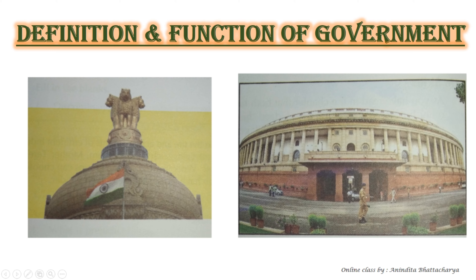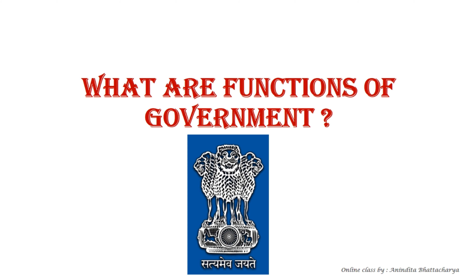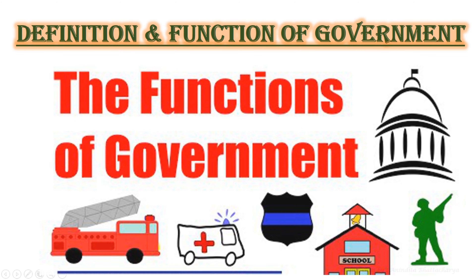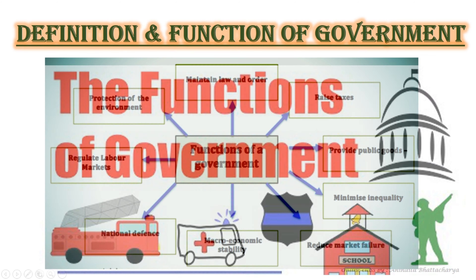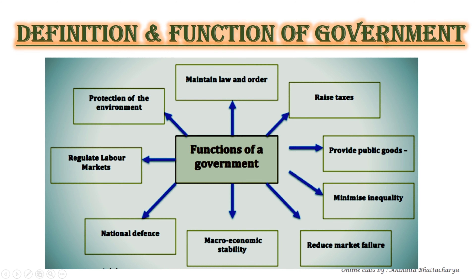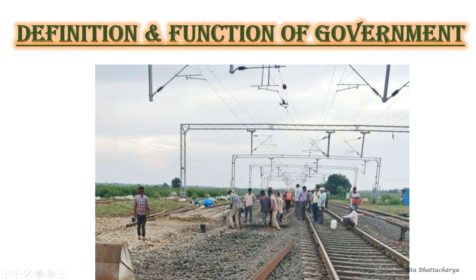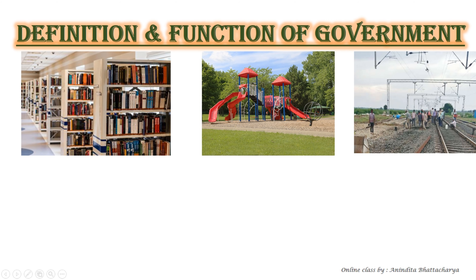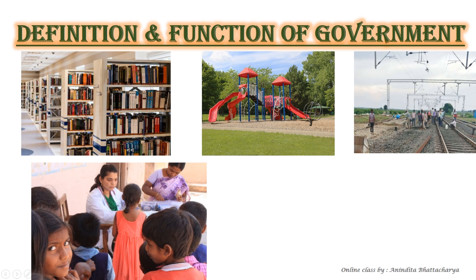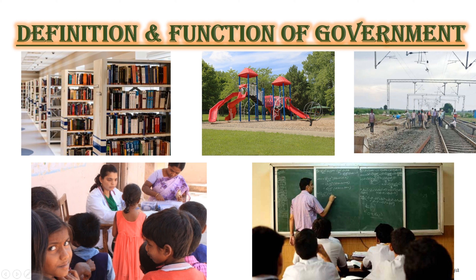What are the functions of government? The government of a country performs various functions. It builds roads, bridges, parks, public libraries, and railway lines. It also looks after the welfare of people by providing health services and education.